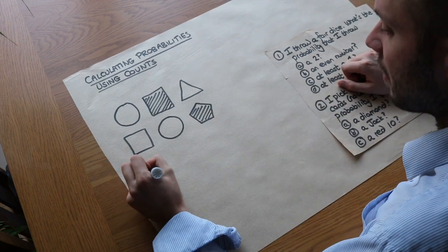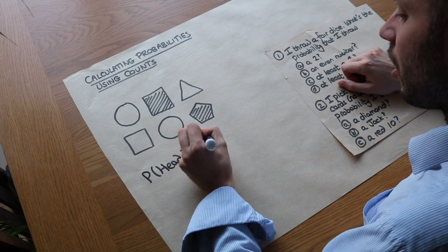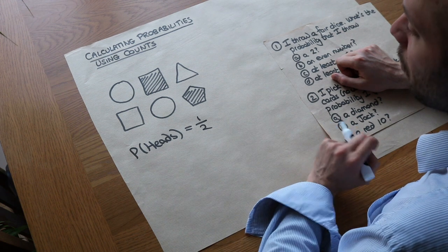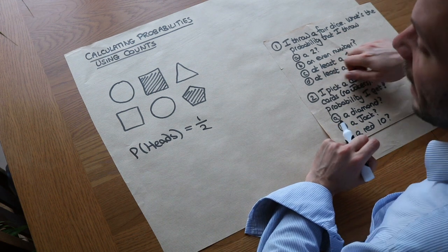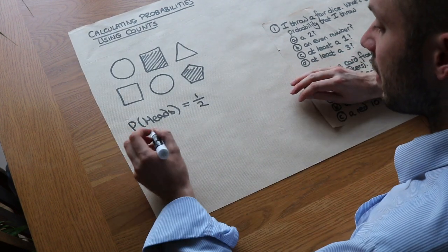So for example, the probability of seeing heads on a fair coin would be half because when we flip a fair coin we expect to see heads half the time. That's what probability means. Now we can work out probabilities using counts and the formula that we're going to use is this.